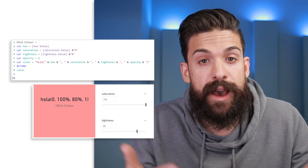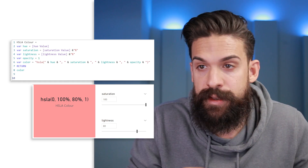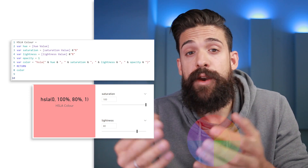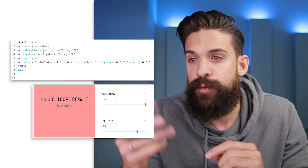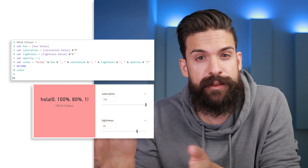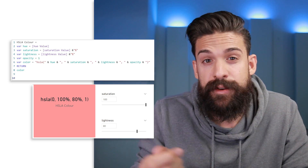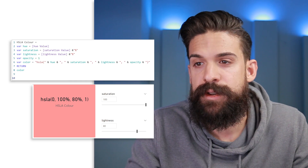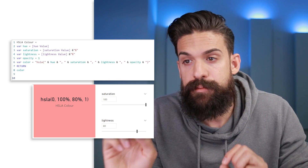The HSL color model is a little more intuitive, so let's focus on that one. The components are: hue, saturation, lightness, and optionally opacity. The hue is the degree on the color wheel, going from 0 to 360, and determines the main color. Saturation goes from 0 to 100, where 0 means completely gray and 100 means full color. Lightness of 0 means completely black, and 100 means completely white. Opacity goes from 0 to 1.